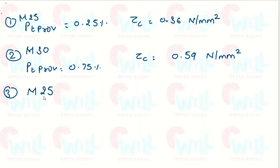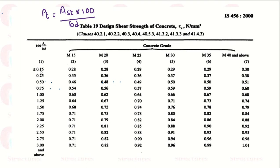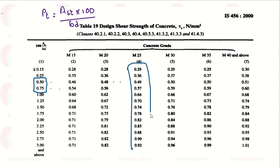Now let's see a third example. We have grade of concrete M25 and PT provided is 0.62%. Looking for 0.62 in the PT column, there is no direct value of 0.62, but we have the values 0.5 and 0.75. So our tau c value will be between these two values, and we need to use interpolation for M25 concrete.